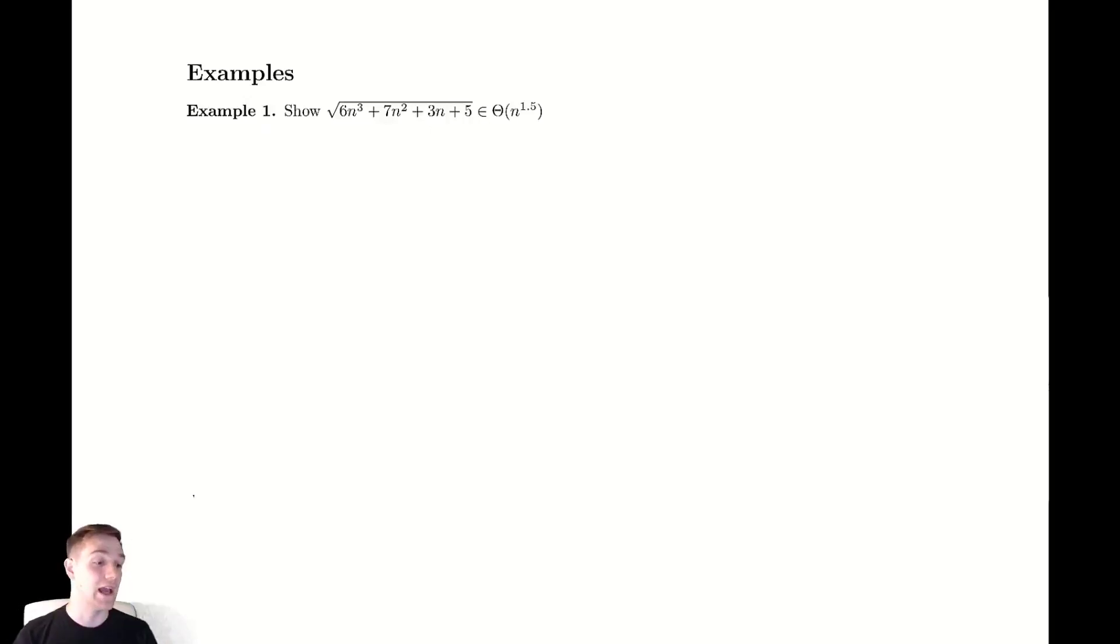That looks a lot like n to the 1.5, so that's our reasoning behind this. Why are we starting with big theta and not big O? Well, that's because in order to show big theta we're going to show big O and big omega along the way. So let us begin by bounding it above.